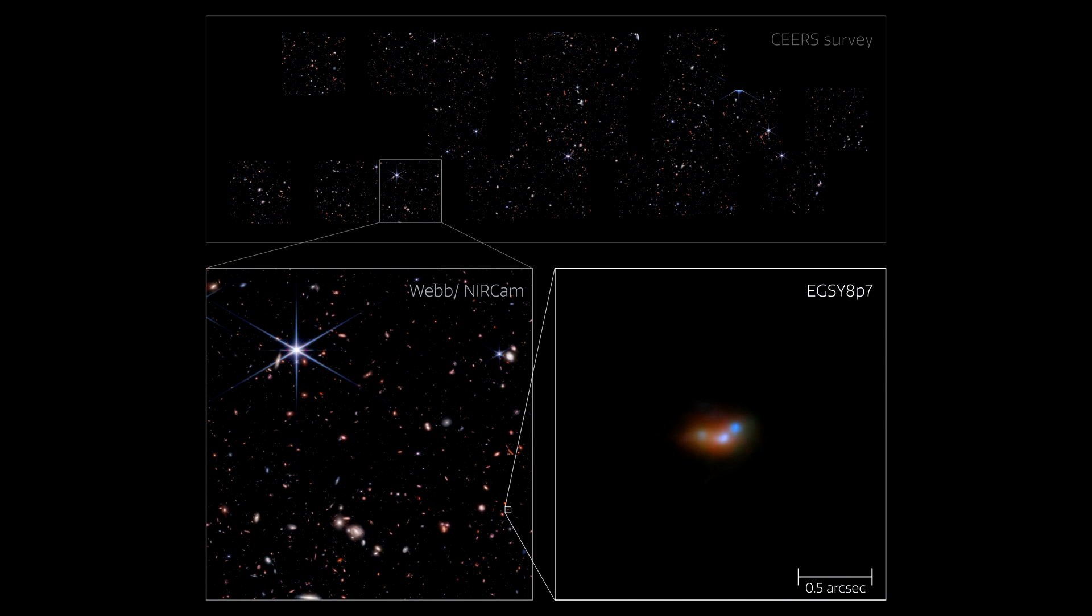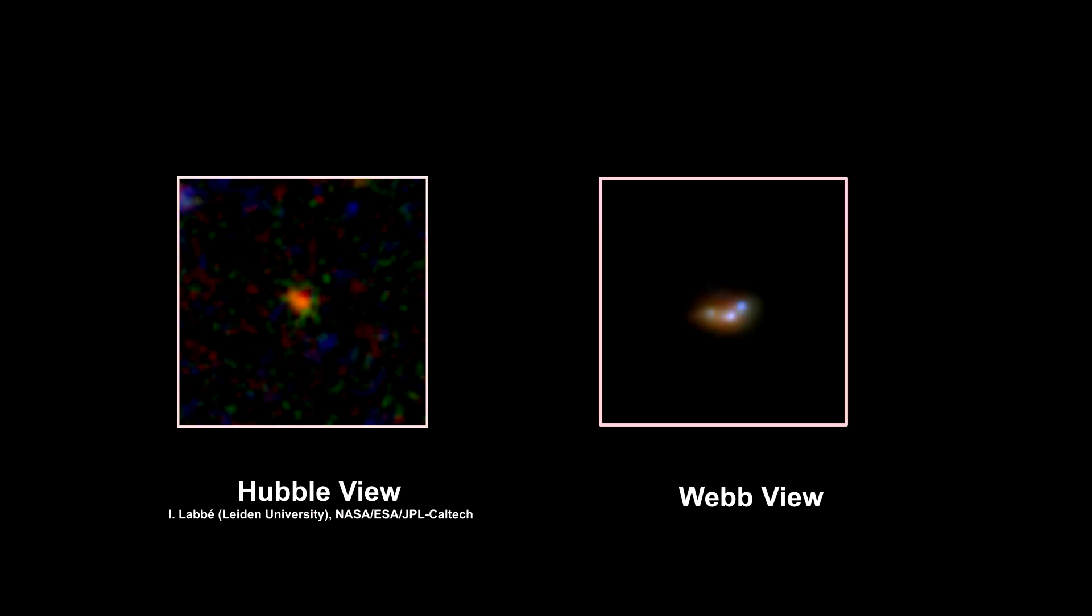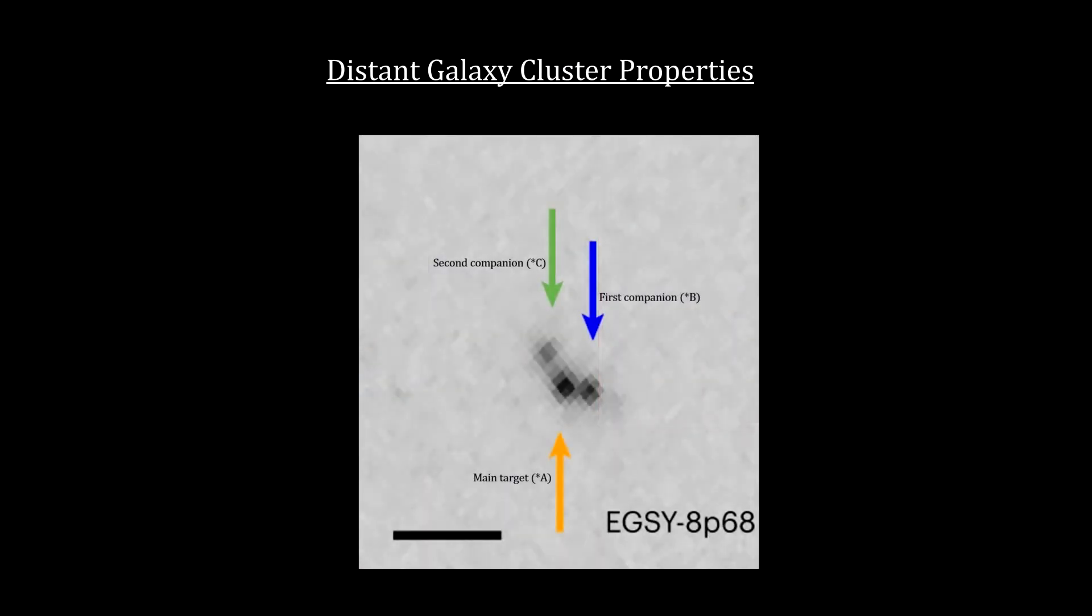We are now seeing this galaxy as it existed just 600 million years or so after the Big Bang. Note that the image shows three interacting galaxies. Here's the view from Webb and Hubble. Where Hubble was seeing only one galaxy, Webb sees a cluster of smaller interacting galaxies. Webb's NIRCam instruments were able to resolve smaller, fainter galaxies that surround the bright galaxy.